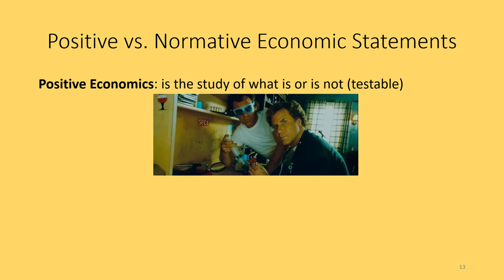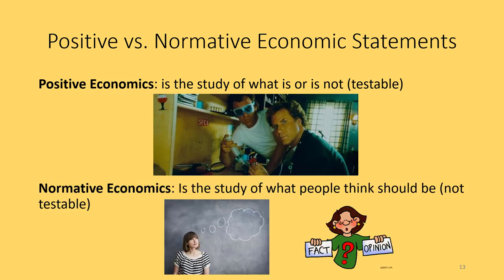For example, a positive statement might be: in 2017, the United States emitted 5,140 million metric tons of carbon dioxide into the atmosphere. We can test that to see if it's true — to verify whether that's the exact amount emitted. It could be true or not true, but the key is that it's testable. That's what makes it different from a normative statement.